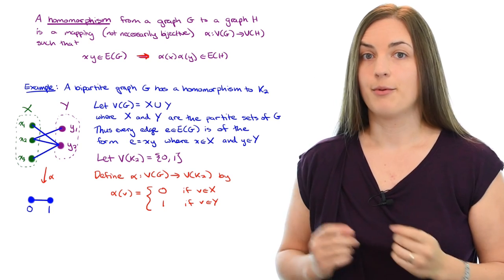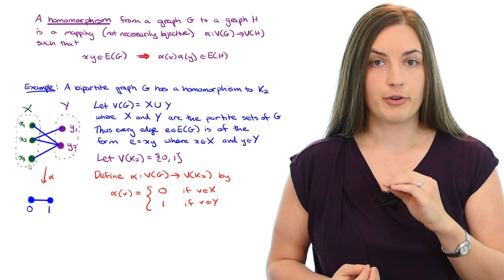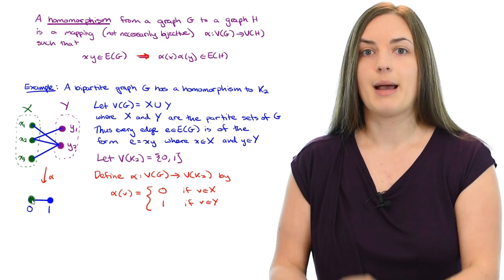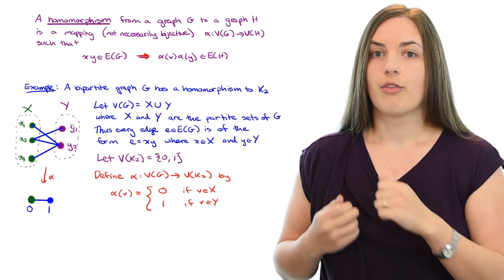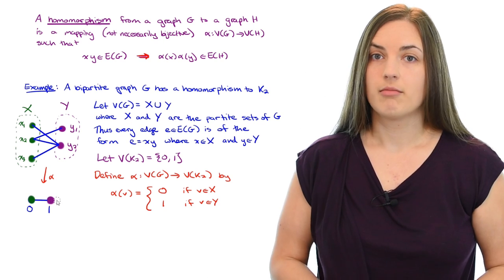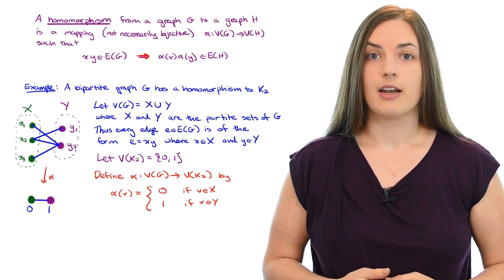If you look at our example on the left, you'll see that all of those green vertices in the set X get mapped to 0. And all of the purple vertices in the set Y get mapped to 1. So that's the visual for what's happening in our mapping.